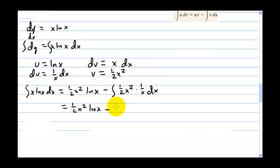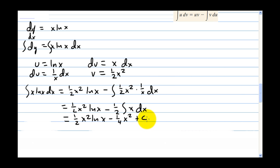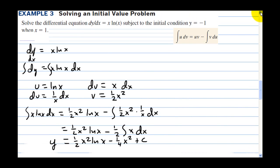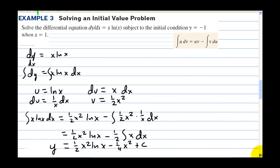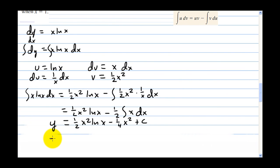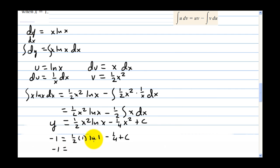One of the x's cancels and we can pull the one half out: one half x squared natural log of x minus one half times the integral of x dx. We know the antiderivative of x, so we get one half x squared natural log of x minus one fourth x squared plus c. Now applying the initial condition: y equals negative 1 when x equals 1. Since natural log of 1 is 0, that term vanishes, leaving negative 1 equals minus one fourth plus c.